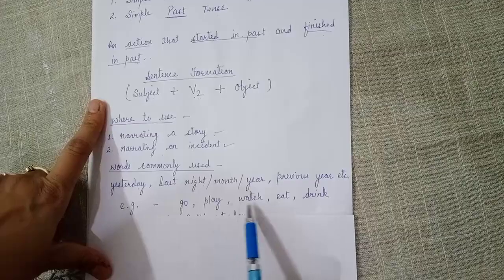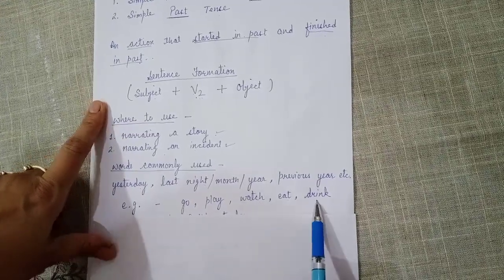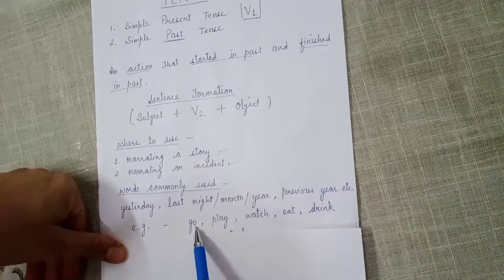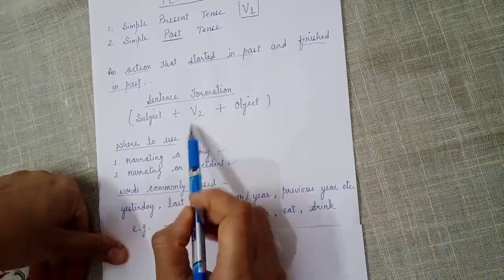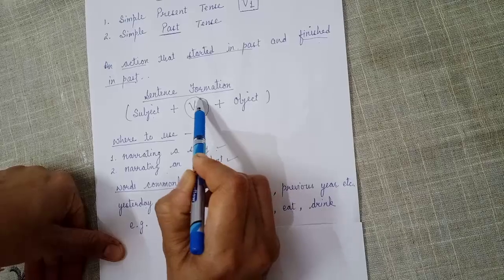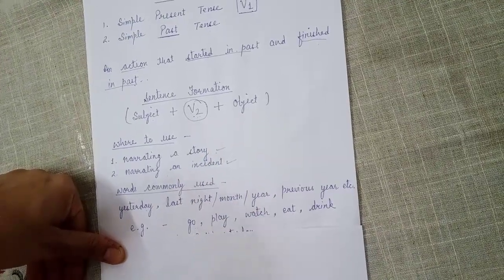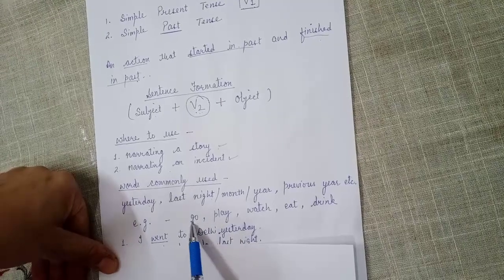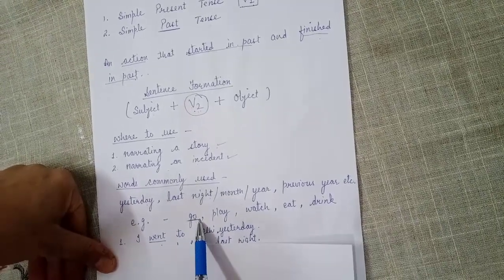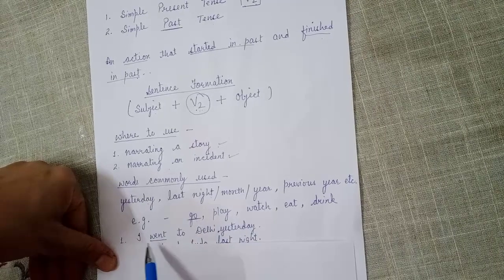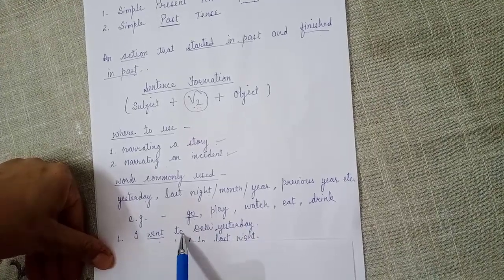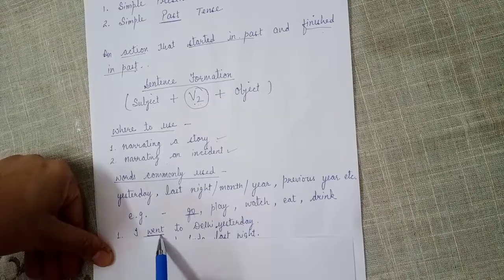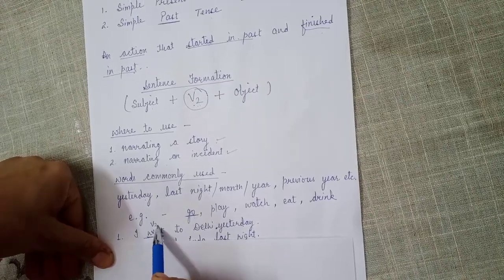I have taken a few verbs as examples: go, play, watch, eat, drink. These are all present form, or first form, of verbs. But according to this tense we are going to use the second form of the verb. Let us see how these are used one by one. Go is the first form and its second form is went. For example: I went to Delhi yesterday. Went is the past form, or second form, of the verb.